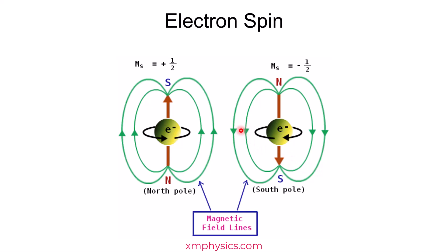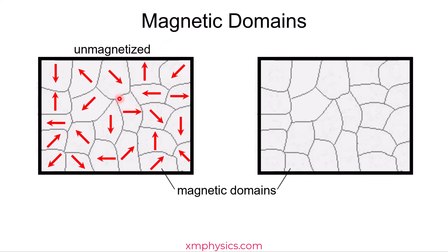It turns out every atom in that nail is like a tiny magnet. Every atom has electrons and there's something called the electron spin, which means that every atom is able to produce a magnetic field. But before the nail got magnetized, the magnetic field of all the atoms are not in the same direction.